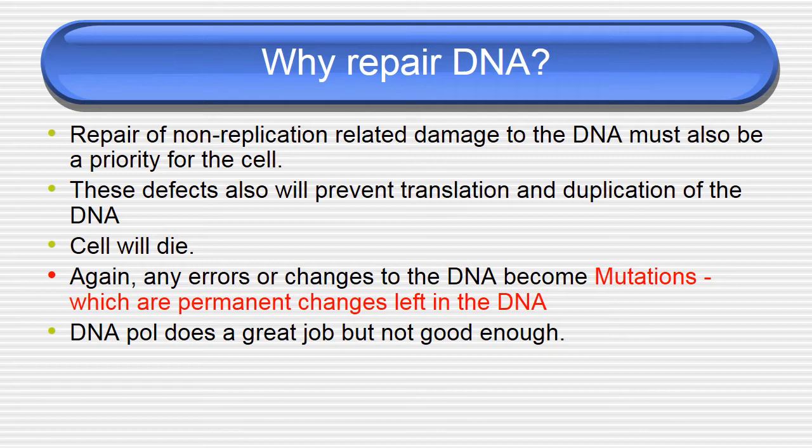The basic requirement of DNA repair is that repair of non-replication related damage to DNA must also be a priority for cells. These defects prevent translation and duplication of the DNA — by DNA damage, the cell will die. Any error or change to the DNA becomes a mutation, which is a permanent change left in the DNA. DNA polymerase does a great job but not good enough.